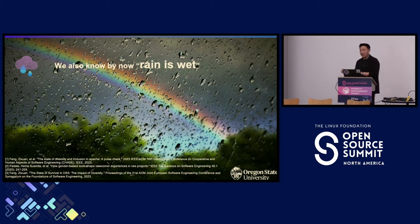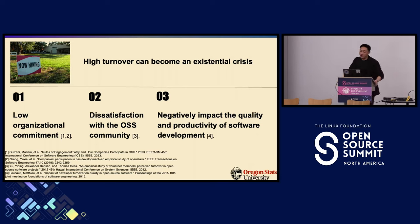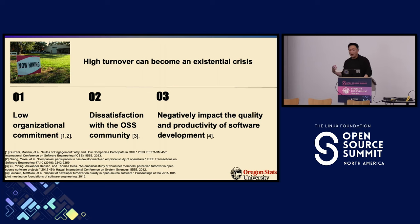Such high turnover rates significantly and negatively impact the sustainability of OSS projects, creating a vicious circle. High turnover can become an extinction crisis, manifesting in several ways — for example, low organizational commitment, dissatisfaction with the OSS communities, and a negative impact on the quality and productivity of software development. Tracing back through this vicious circle, it begins with lack of diversity and inclusion.